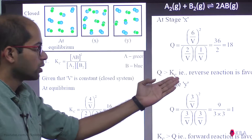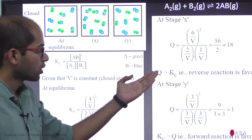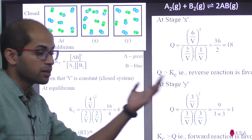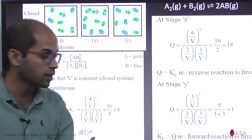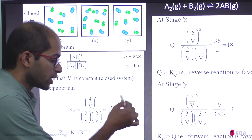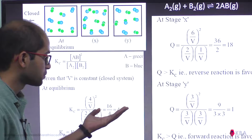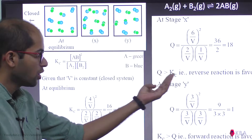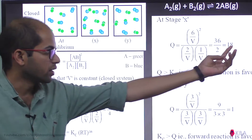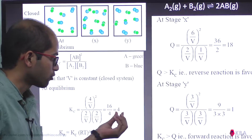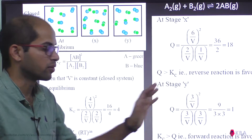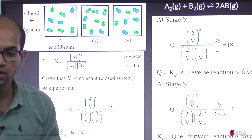Q has a value of 18. Kc has a value of 4. Since 18 is greater than 4, Q is greater than Kc. Therefore the reverse reaction is favored.